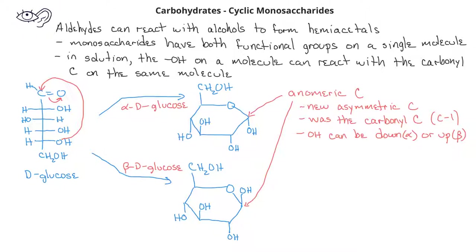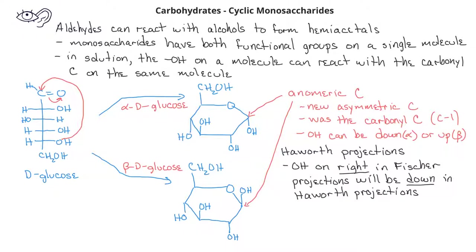These kinds of drawings of cyclic monosaccharides are known as Haworth projections. When converting a Fischer projection to a Haworth projection, if we have a hydroxyl group on the right in a Fischer projection, it will end up pointing down in a Haworth projection.